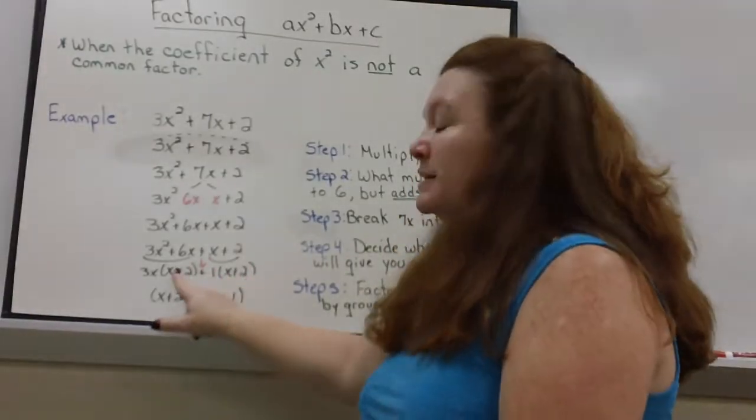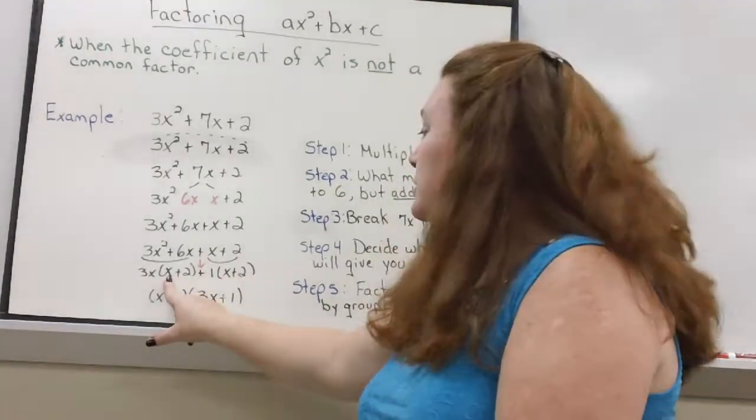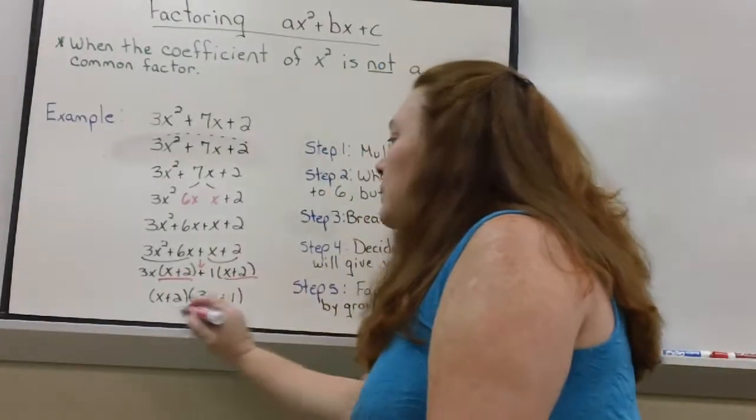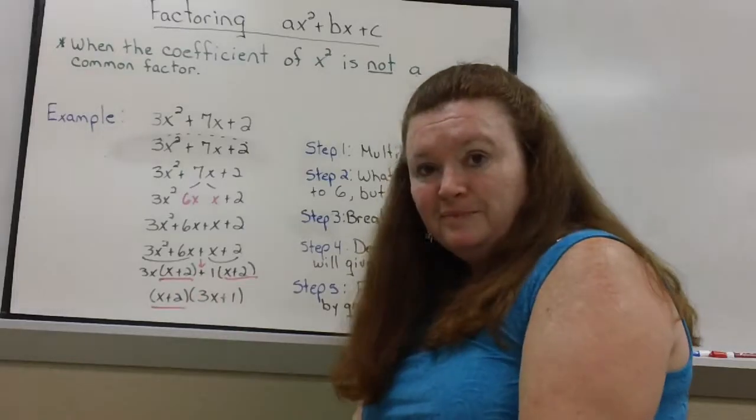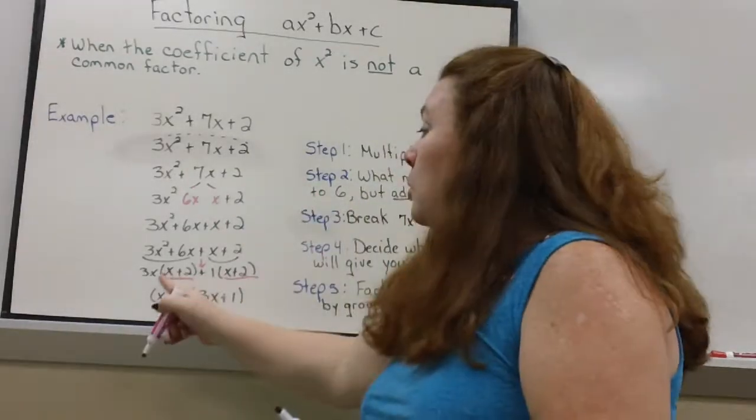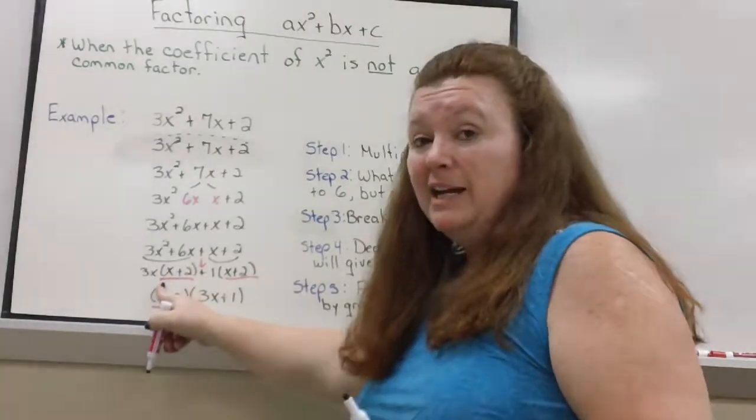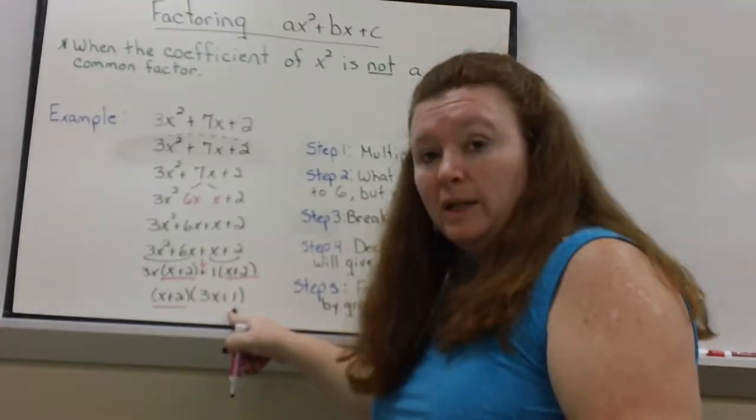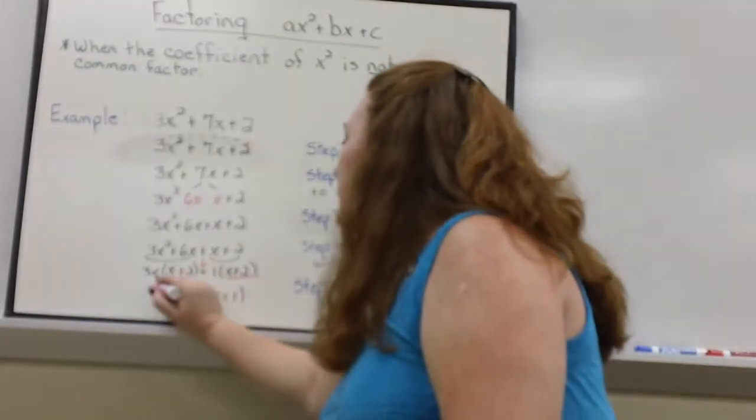And what do they have in common? They both have an x plus 2. So I'm going to take out my common factor of x plus 2 and bring it to the front. And then ask myself, what is left when I divide by x plus 2? Here I have a 3x and here I have a plus 1. So this is my final answer.